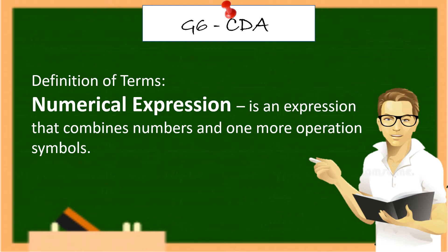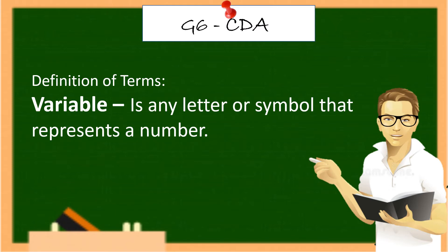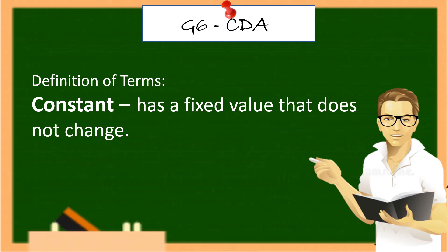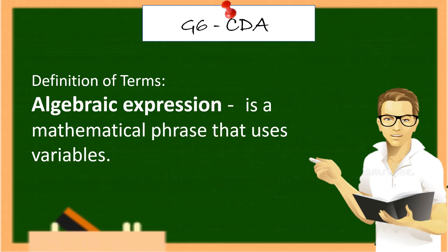Let us define some terms. Definition of terms. Numerical expression is an expression that combines numbers and one or more operation symbols. Variable is any letter or symbol that represents a number. Constant has a fixed value that does not change. Algebraic expression is a mathematical phrase that uses variables.